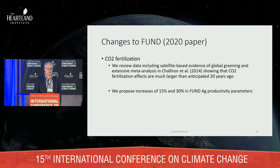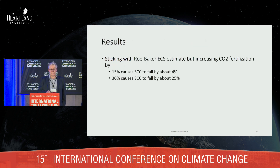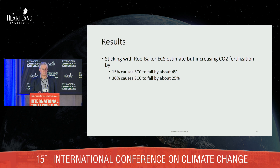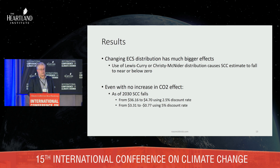As for CO2 fertilization, the Fund model was set up based on information from the early 1990s. Since then there's been a ton of work on global greening and agricultural benefits of CO2. We used a meta-analysis published by Chalinor et al., which showed that CO2 fertilization effects are much larger than anticipated 20 years earlier — testing 15 and 30 percent increases in Fund model agricultural productivity parameters across a variety of discount rates. Using updated ECS distributions from Lewis-Curry or Christy-McNider causes social cost of carbon estimates to fall basically to zero through 2050 — from the mid-$30s down to under $5 at 2.5% discount rate, and to minus 77 cents at 5%.